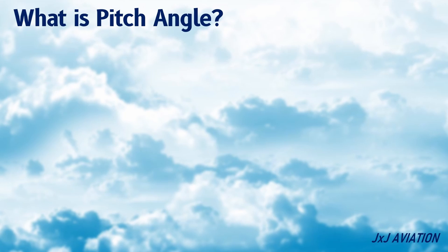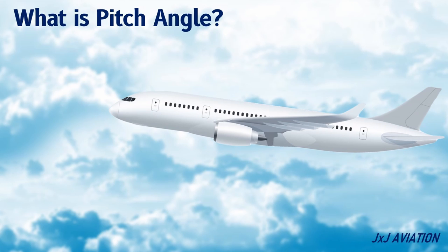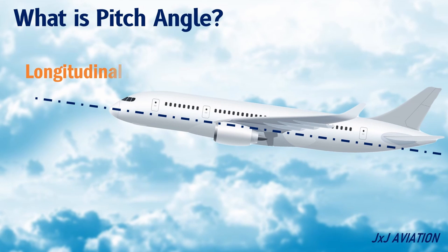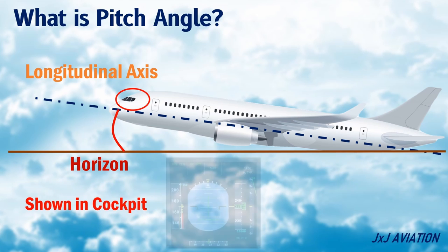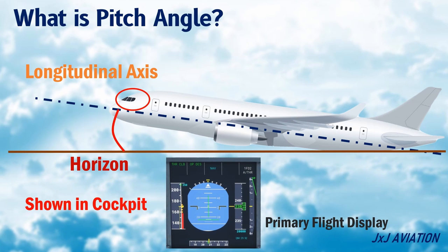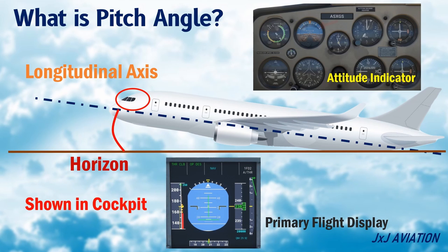What is pitch angle? Pitch angle is defined as the angle between the longitudinal axis of an aircraft and the horizon. The pitch angle is shown in the cockpit on the primary flight display or the attitude indicator.